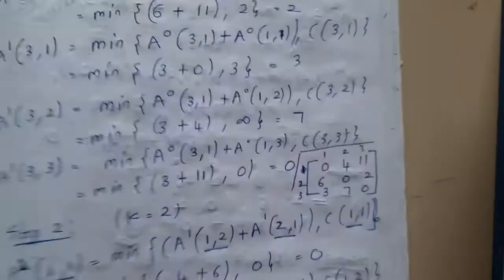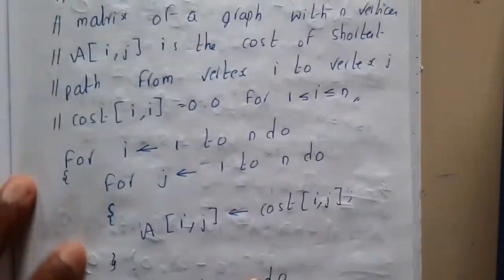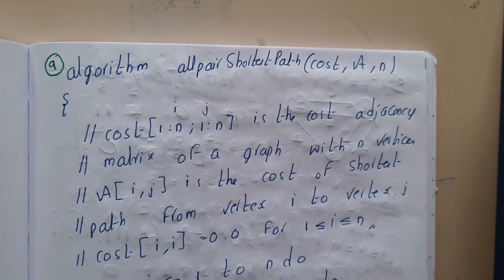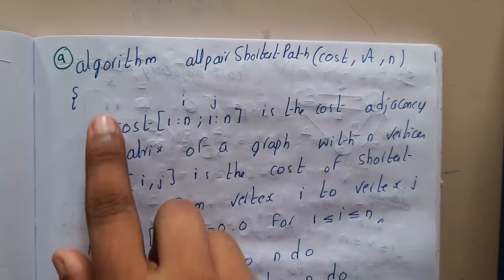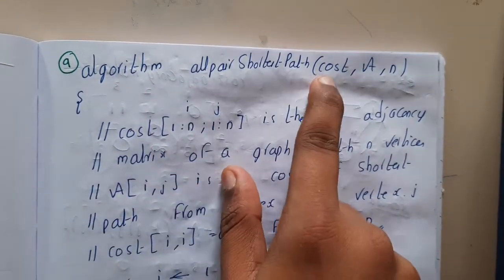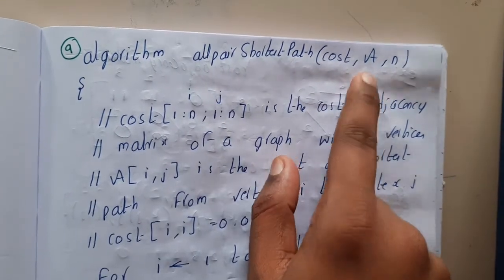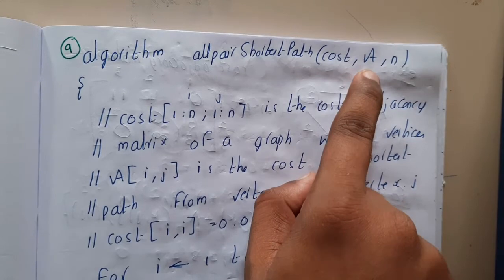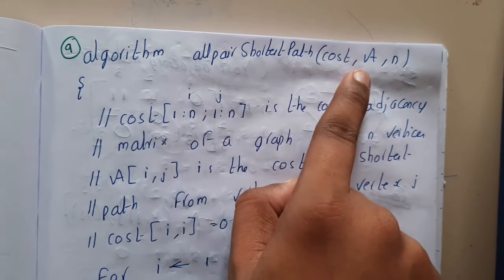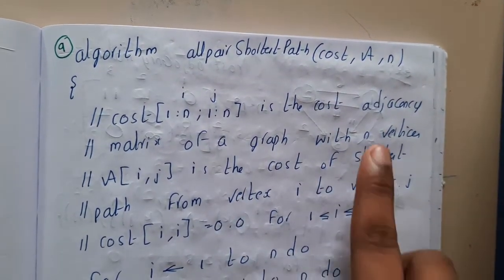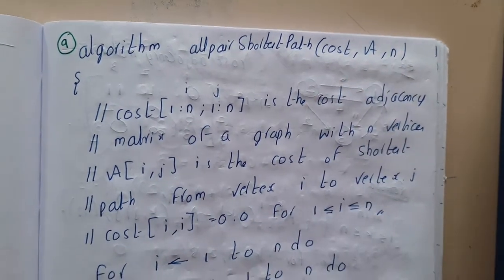If you are confused, please watch the previous lecture, because there we discussed the method and the trick we are following. Now, for the algorithm for all pair shortest path, we will be passing the cost matrix A and n. A is the matrix of the original graph — please remember that.